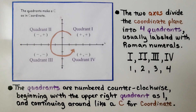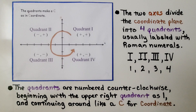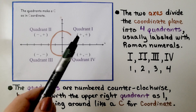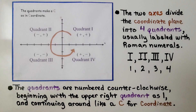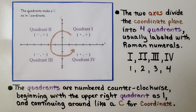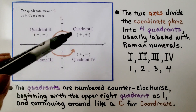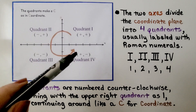The two axes divide the coordinate plane into four quadrants, usually labeled with Roman numerals: quadrant one, quadrant two, quadrant three, and quadrant four. The quadrants are numbered counterclockwise. Notice the upper right quadrant is one, and it continues around like the letter C as in coordinate. So you can remember which quadrant is which because it starts there and we make a letter C as in coordinate — going one, two, three, four around.